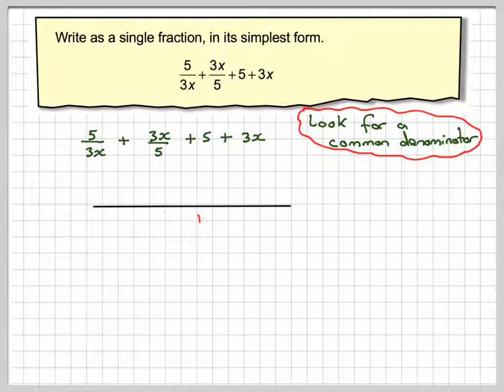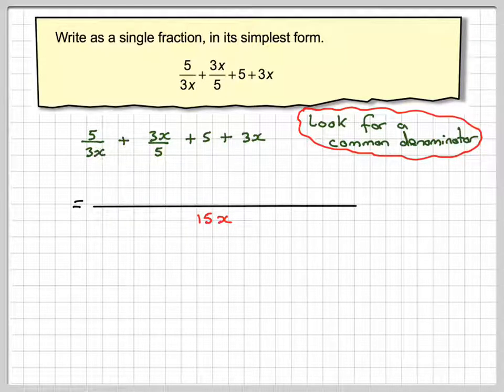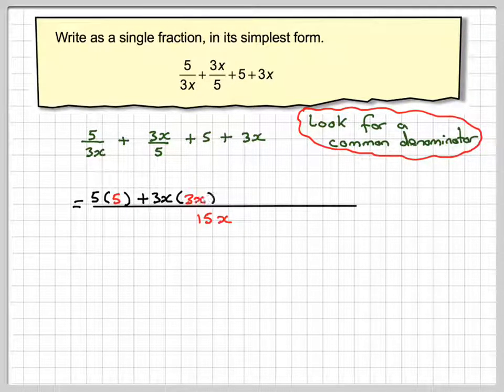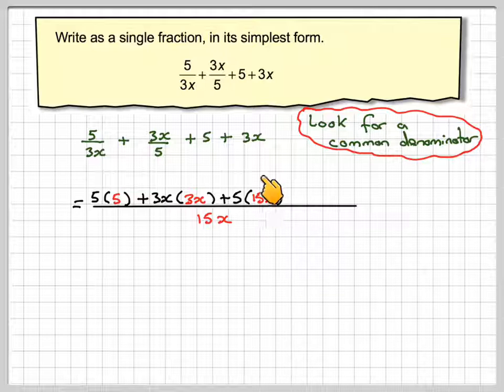So we're now going to put everything over 15x. This has been multiplied by 5, so therefore the 5 will need to be multiplied by 5. This has been multiplied by 3x, so therefore the 3x will need to be multiplied by 3x. This has been multiplied by 15x on the bottom, it's 5 over 1, so this 5 will need to be multiplied by 15x.